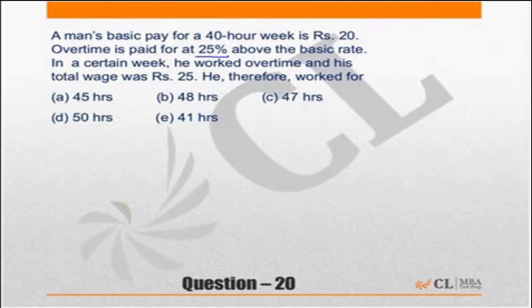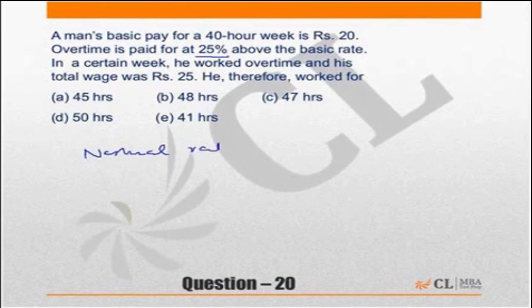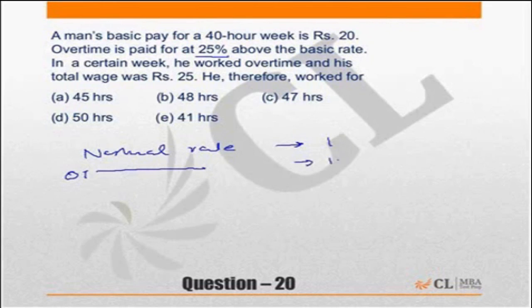You can start taking the shorter approach straight away, or you can work the other way. The key thing to remember is: if the normal rate is 1, then the overtime rate will be 1.25. So whatever he normally gets for 10 hours, now he will get for 8 hours.